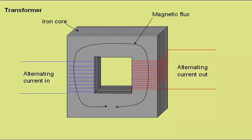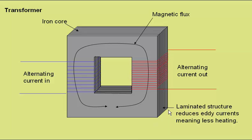By constructing the iron core from a series of laminated plates, like this, each separated by a thin insulating layer, it reduces the eddy currents within the core, and so means less heating and a more efficient transformer.